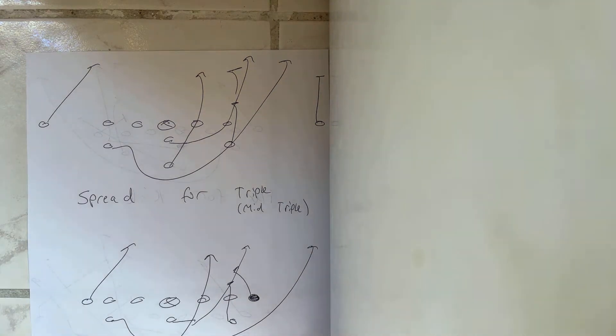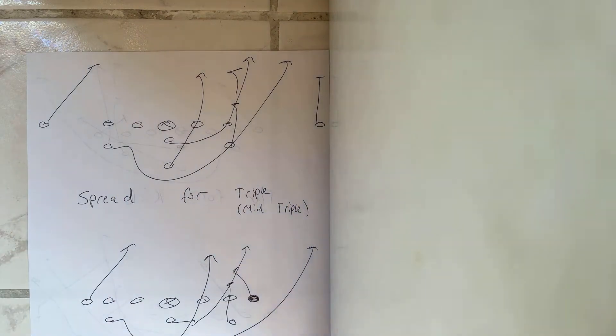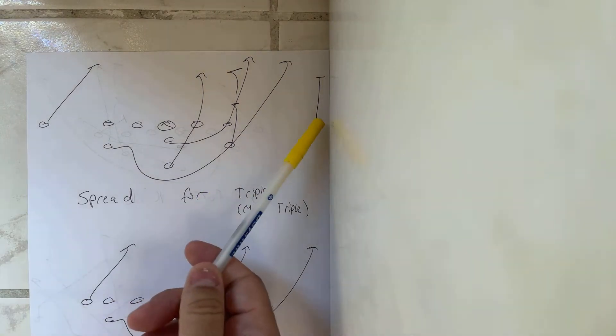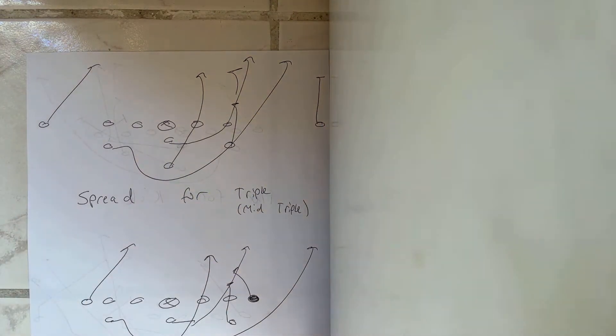Anytime they wanted to run a triple option, they were in the spread formation. They split the receivers out wide. It was over 95% of the time they had a receiver split out wide. Always keep this in mind about Army, Navy, Air Force: if they believe the ball is going to get pitched or tossed and end up on the perimeter, they're always going to have a receiver split out to that side because they feel that's necessary to cancel the deep defender. So they're in spread for triple and mid-triple.